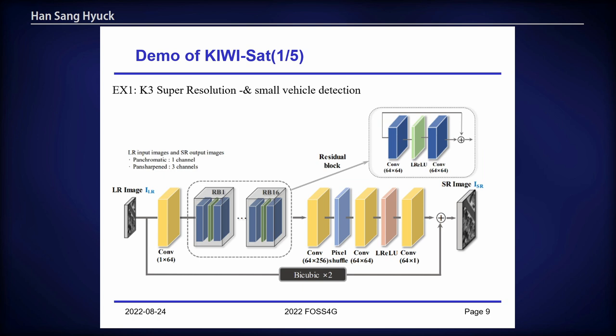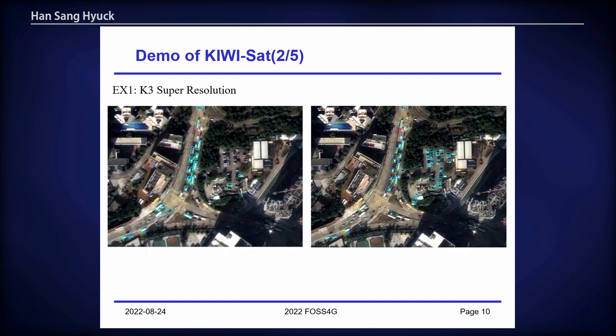With QSET, AI can be easily applied to satellite images. We applied two AI algorithms developed by ourselves. One is super resolution with K3 optical images. You choose an area of interest and apply the AI algorithm — that's it. It shows that the detection performance of images with super resolution applied is better than the original images.